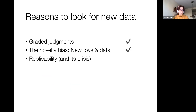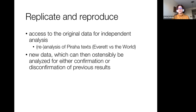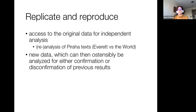I've talked about graded judgments and the novelty basis. I want to very briefly talk about replicability and the crisis of replicability. There is always a need to access the original data for independent analysis. Probably the most famous example is Pirahã, where Dan Everett says that this language does not have embeddings and doesn't have any theory of mind. People have been looking at Pirahã texts collected by Everett and trying to reanalyze them — you may agree or not agree with him, but at least we can use his data to judge the experiment.